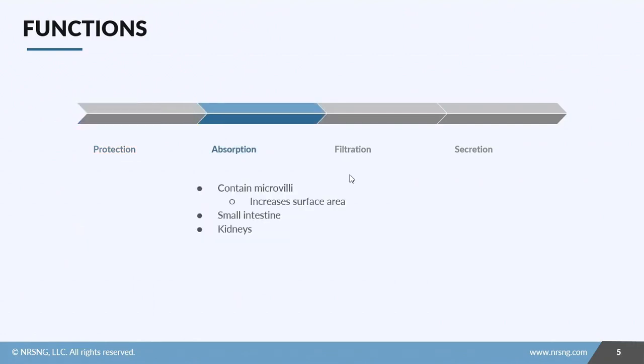Next is absorption. Epithelial tissue can have what's called micro villi. Basically, it is finger-like projections on the outside of the cell. What this does is it actually increases the surface area. So instead of just having this straight line, straight length of cell membrane, we actually have all of this surface that we can use to absorb nutrients through the cell and into our bloodstream. Two examples of this are in our small intestine, where we need to absorb from food, and in our kidneys, where we need to reabsorb out of the urine and back into the bloodstream.